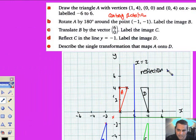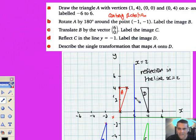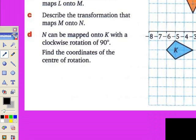That is the line x equals 2. The line x equals 2 is the mirror line that separates A and D. So describe the single transformation that maps A onto D: you need to say reflection in the line x equals 2, and that would take A onto D.